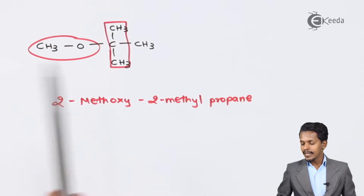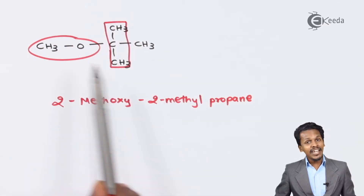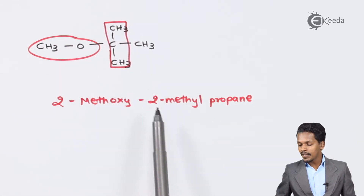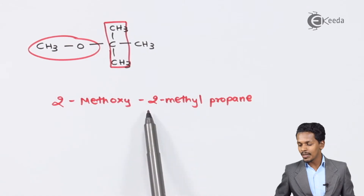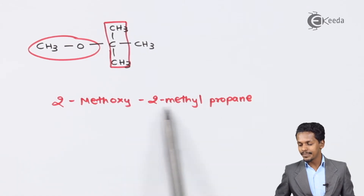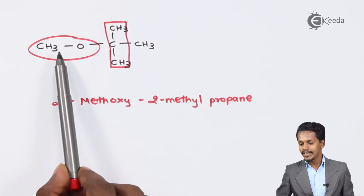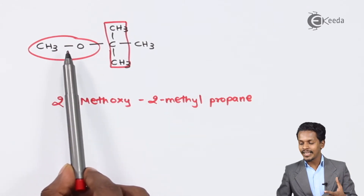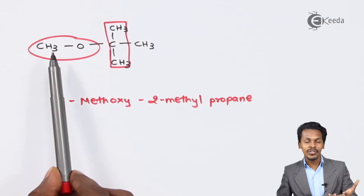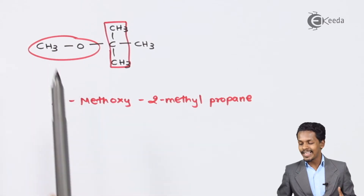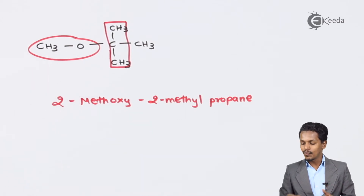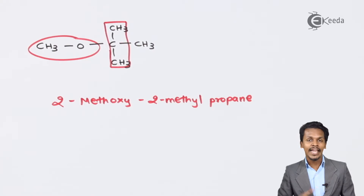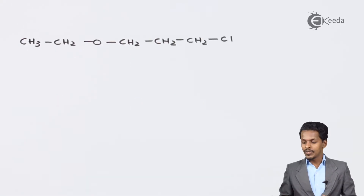If you observe, the parent chain is 2-methylpropane, so that comes last. The alkoxy substituent comes first. So the full IUPAC name for this compound is 2-methoxy-2-methylpropane. That concludes this example.